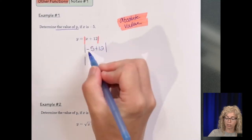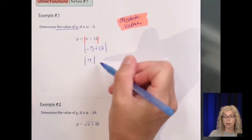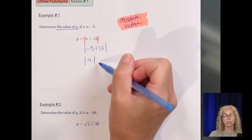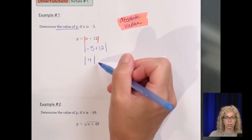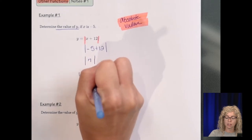So negative 5 plus 12 is a positive 7. And the absolute value of 7, remember absolute value is the distance that a number is away from 0. So the absolute value of 7 is 7.